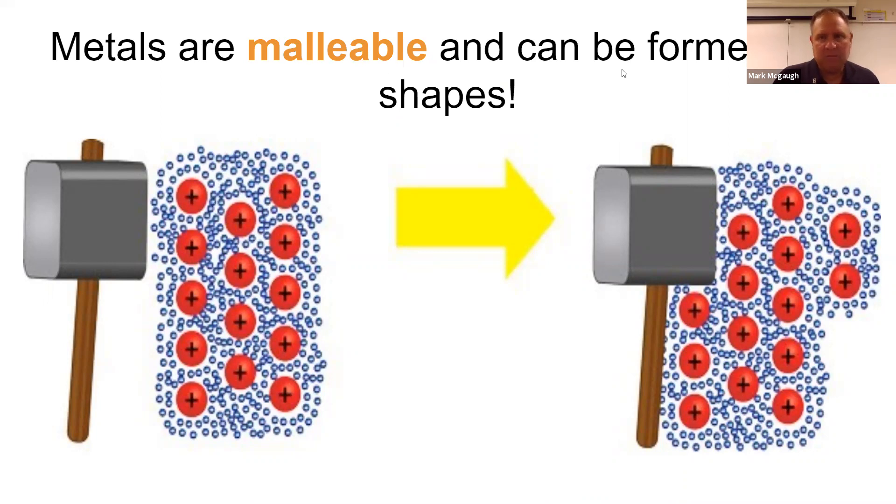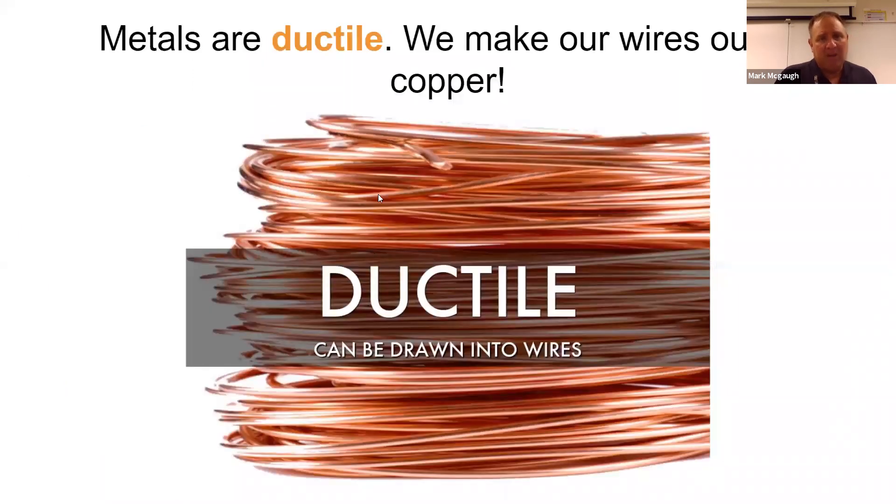That's called malleable, be formed into shapes. Metals can also be made into wires, which is important. That's why we have electricity in our homes, lights in our homes, power up our cell phones and laptops and all those things we enjoy using in our life. And to be able to make something into a wire is called ductile. Ductile is being able to make something into a wire.